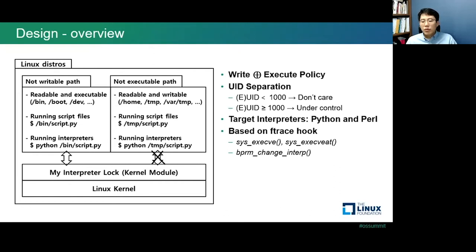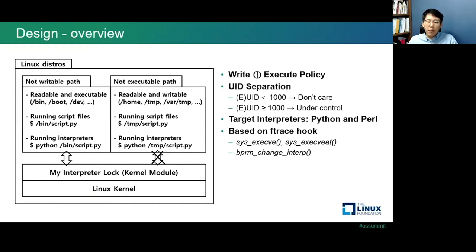Python and Perl are targeted because most Linux distributions install them by default. The interpreter lock is a kernel module, and it hooks functions like sys_execve, sys_execveat, and bprm_change_interp within the kernel using the ftrace feature. So it allows the execution of script files in non-writable paths only for normal users. The administrator like root can execute interpreters and script files in any path, while normal users and processes cannot execute interpreters and script files in a writable path. In summary, my interpreter lock controls unauthorized execution of interpreters and script files by path and EUID.